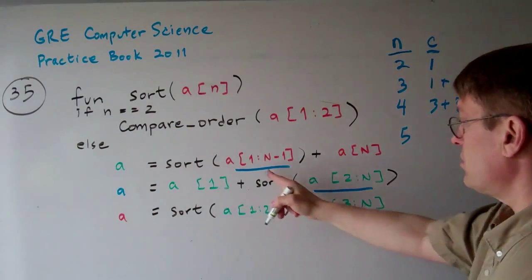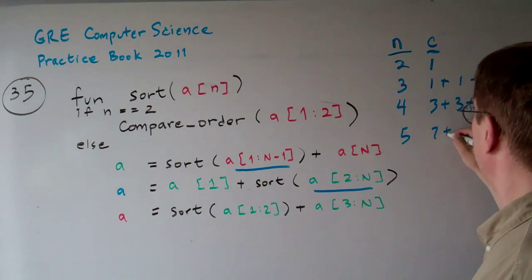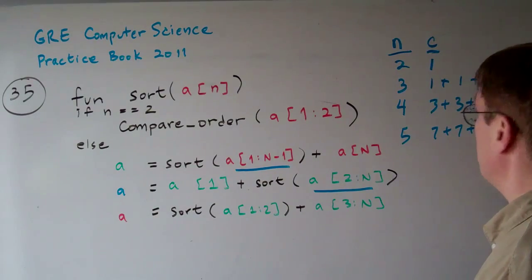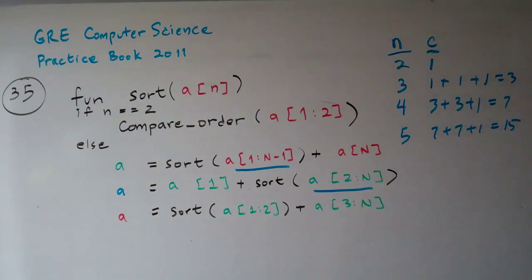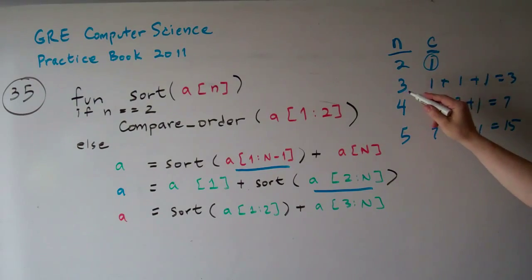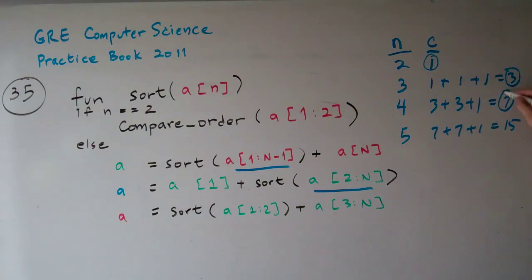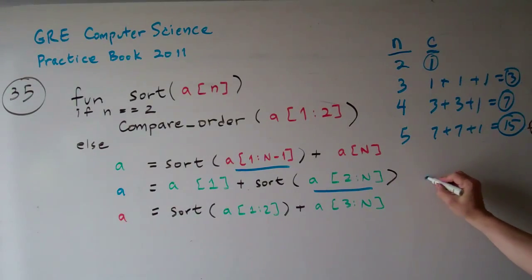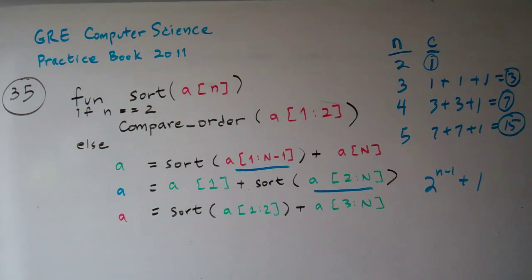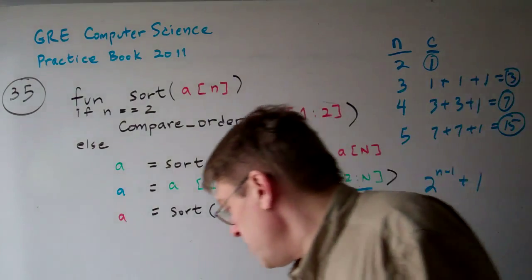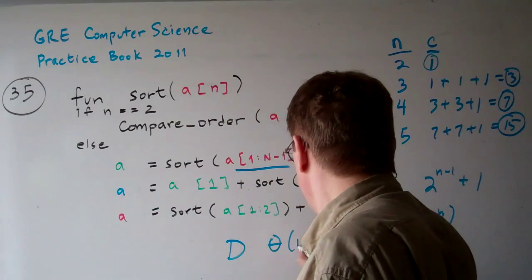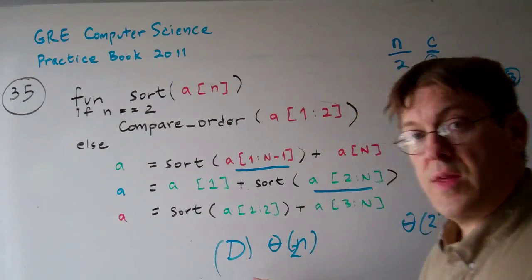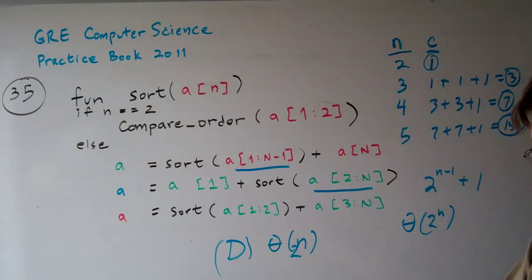If n equals five, each recursive call handles four elements giving seven comparisons each, so C(5) = 7 + 7 + 1 = 15. Mapping it all out: sorting two numbers gives 1, three gives 3, four gives 7, five gives 15, and so on. The pattern is 2^(n−1) − 1 + 1, which is Θ(2^n). So the answer is D: Theta of 2^n is the time complexity of this algorithm.